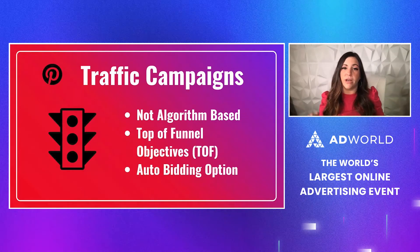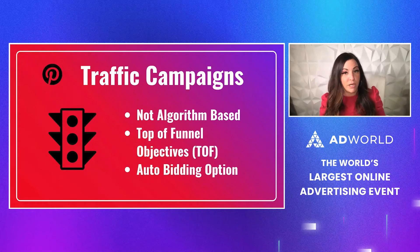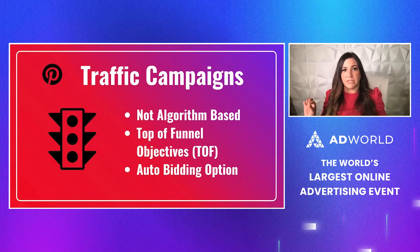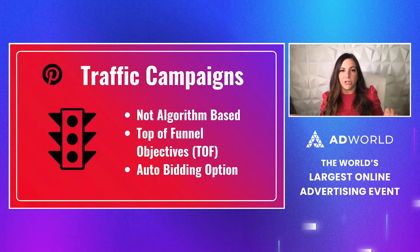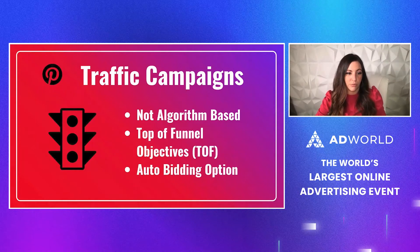Traffic campaigns are awesome. They're not algorithm-based, so that's one thing to think about, but they are really good for top-of-funnel high quality traffic and we also have auto bidding options. They just rolled out a full CBO campaign, so now you can only optimize at the campaign budget optimization level. So far it's actually doing better for some of our top-of-funnel campaigns — we can spread the budget out better per ad set versus at the campaign level, so that's going really well.